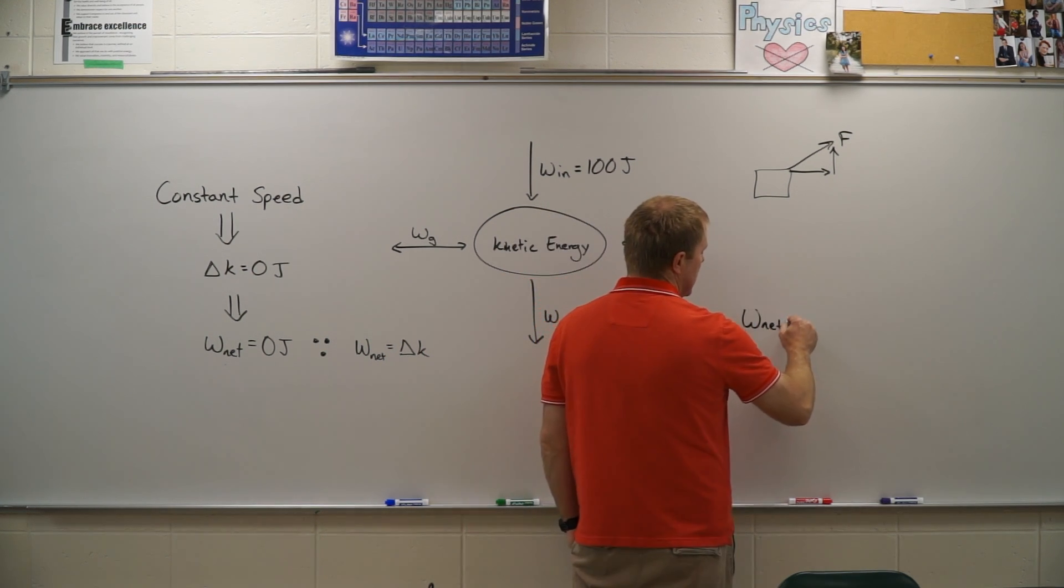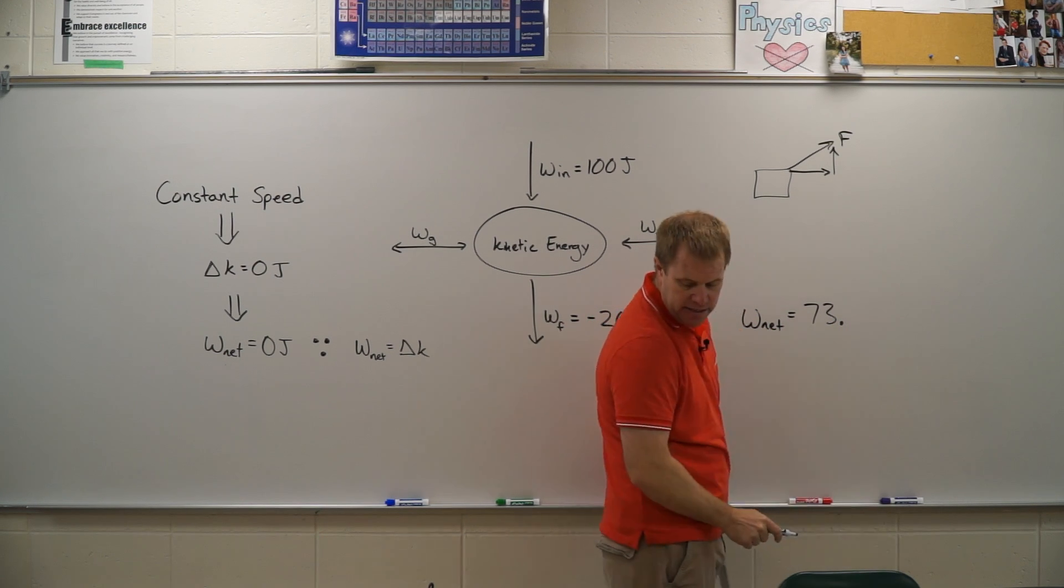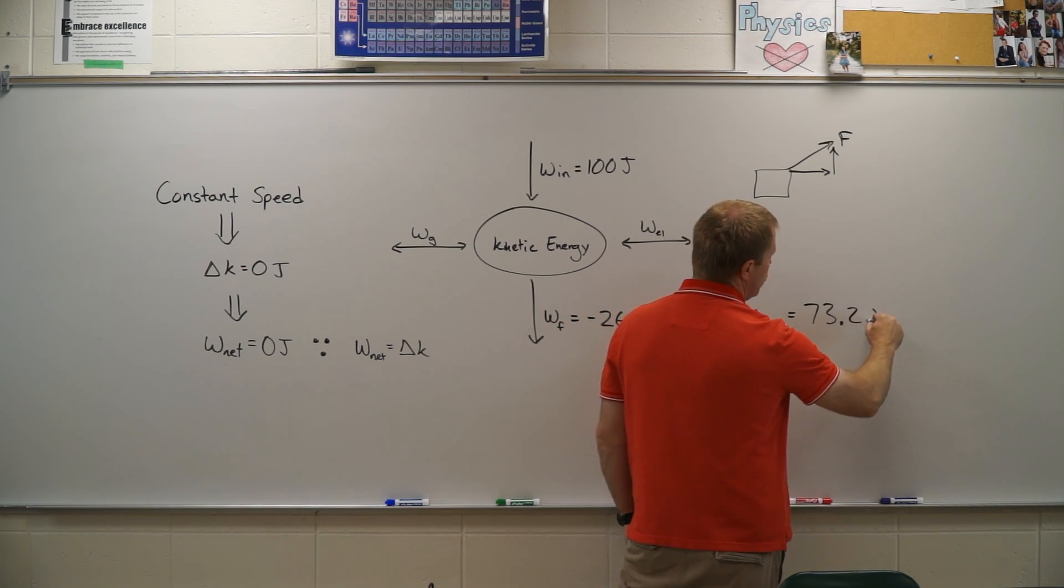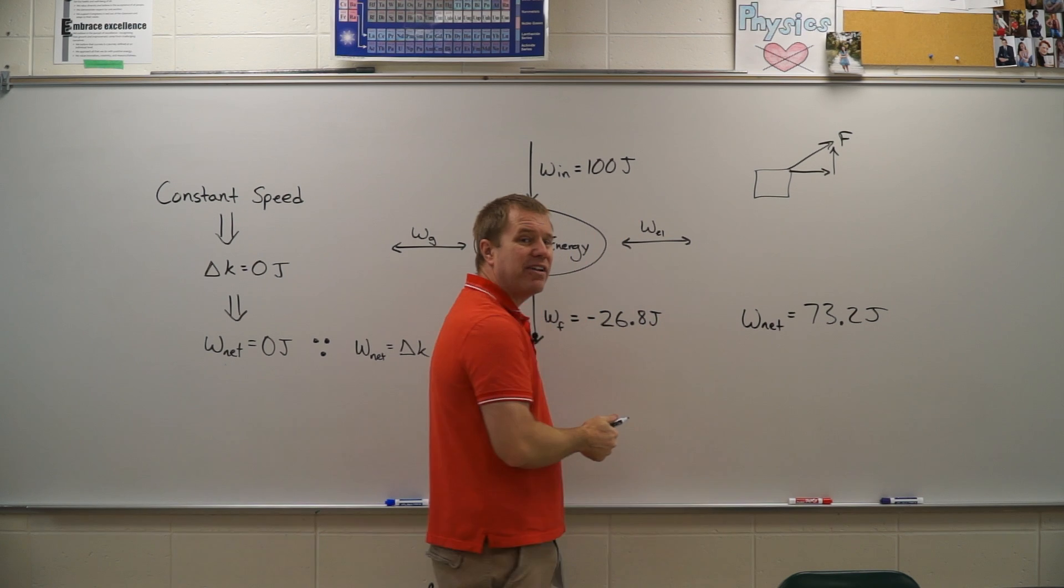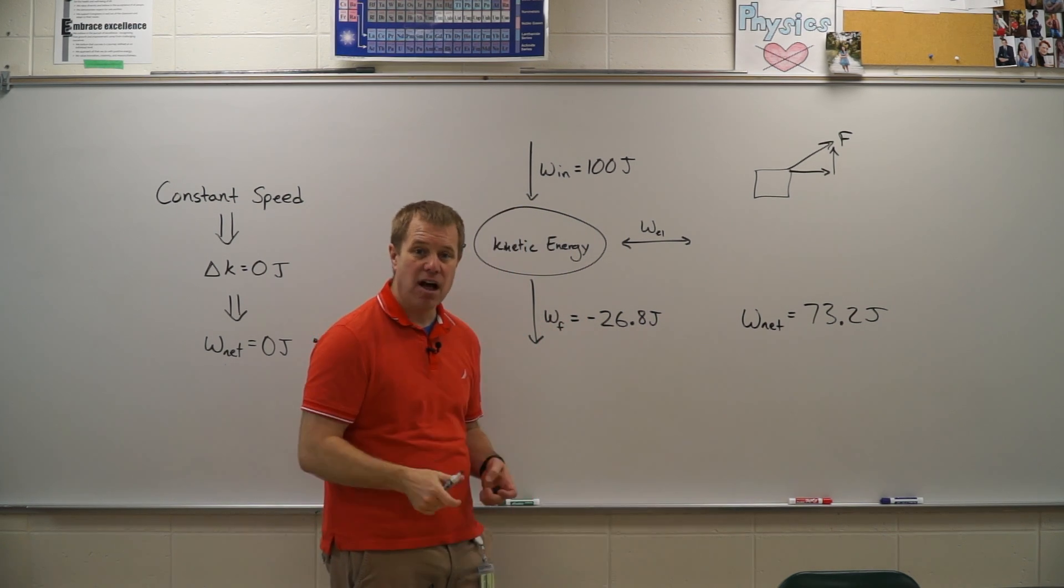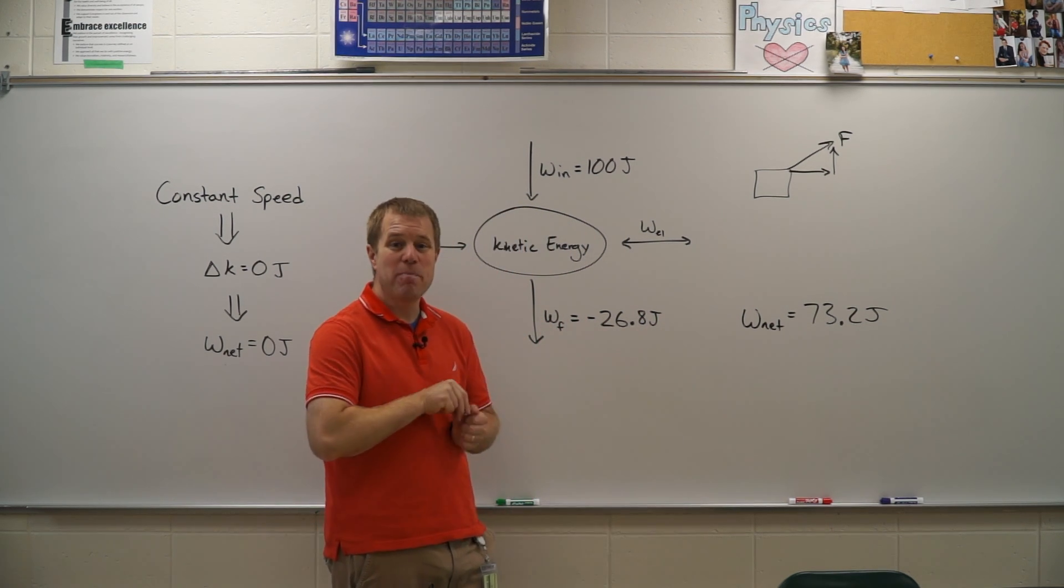So work net is equal to 73.2 joules. Because we have a net gain, that means our kinetic energy is going up. Our object is speeding up.